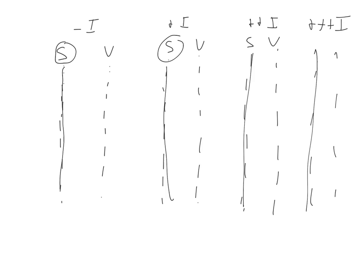Sometimes we just use a fixed substrate concentration for all our measurements in the presence of different inhibitor concentrations. Therefore, it's quite difficult to use these secondary plots because we don't get any KM apparent or Vmax apparent. We only have a fixed substrate concentration.